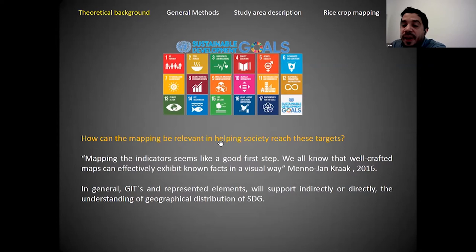How can mapping be relevant in helping society reach these targets? Mapping the indicators seems like a good first step. We all know that well-crafted maps can effectively exhibit facts in a visual way, as said by Minu Jankrack. We think geography and geographic information technologies will support understanding of geographical distribution of SDGs and related variables.